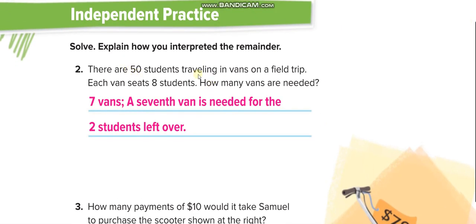Next one here. There are 50 students traveling in van on a field trip. Each van seats 8 students. How many vans are needed? When you divide 50 with 8, you'll get 6 remainder 2. So for the remaining 2 students, they're humans, important. So you can't tell them to go back. What you will do, you'll bring another van for them. So instead of 6 vans, you'll bring 7 vans. A 7th van is needed for the 2 students left over in the remainder.